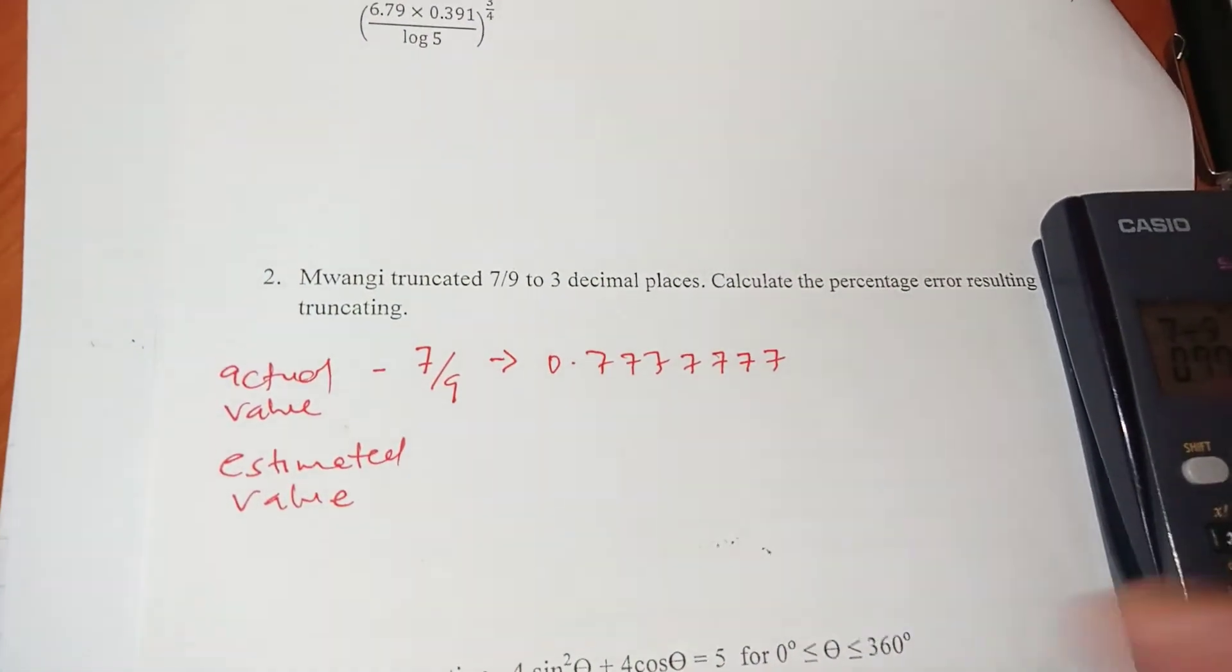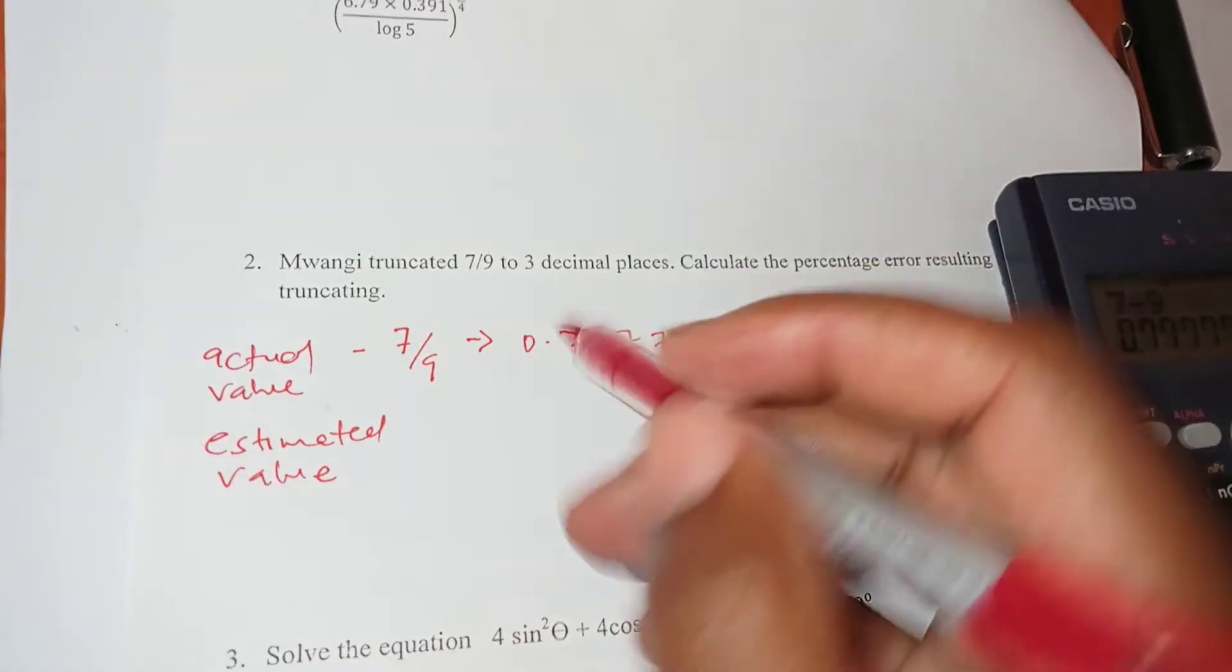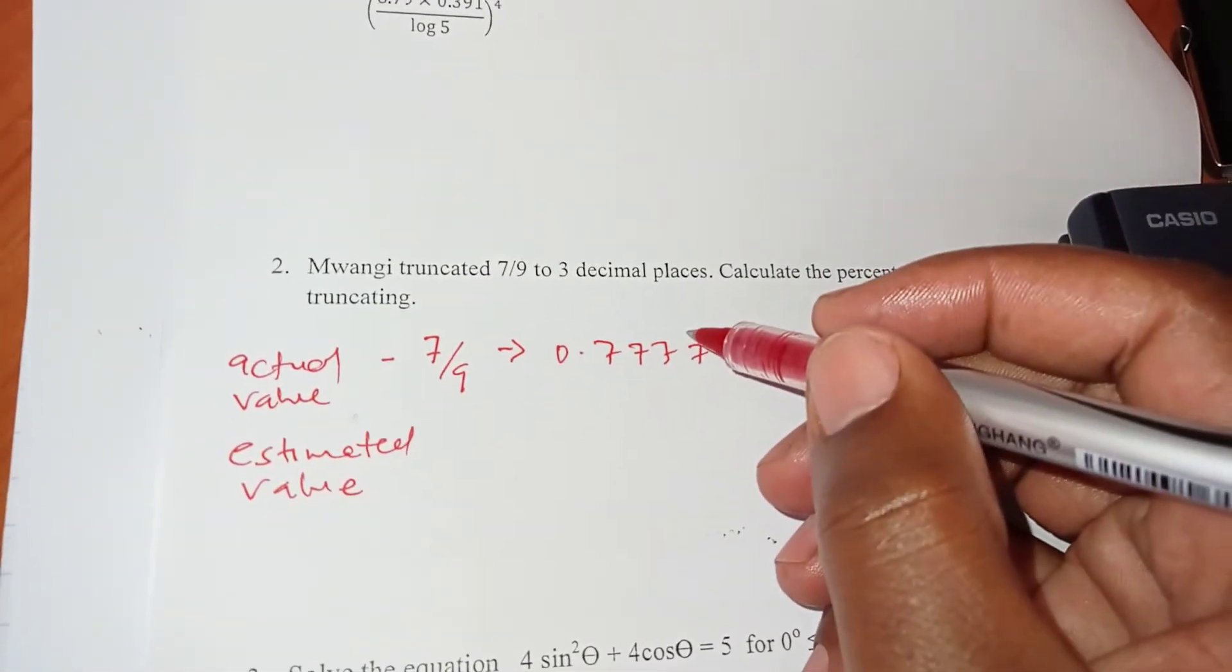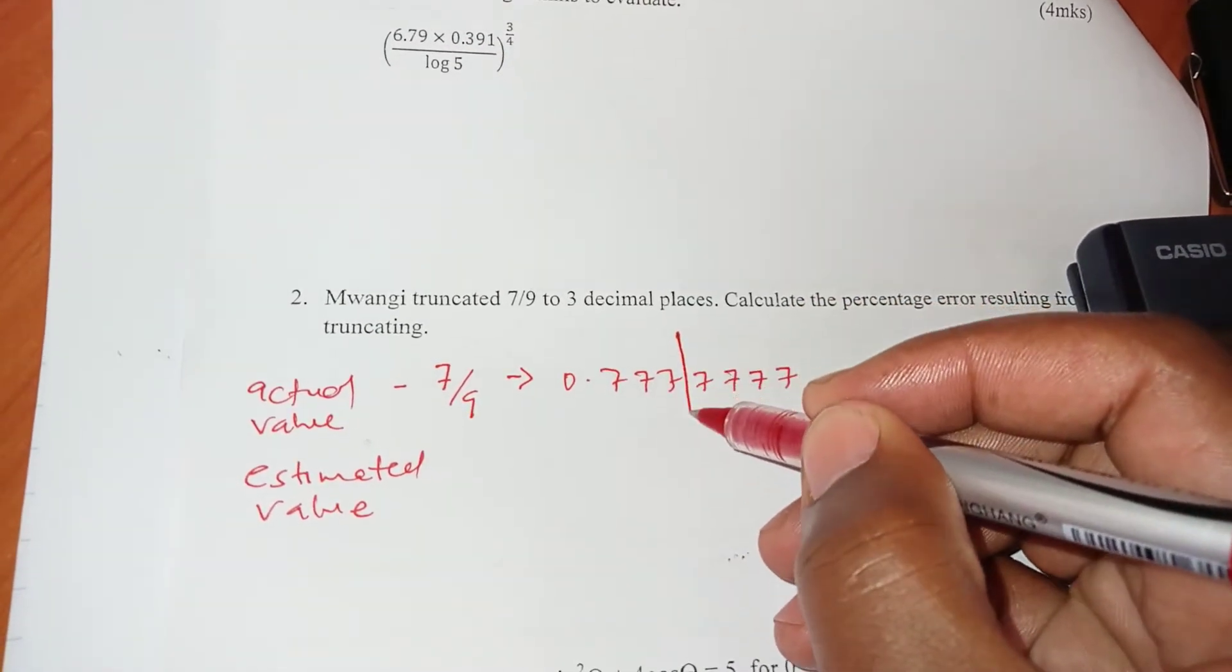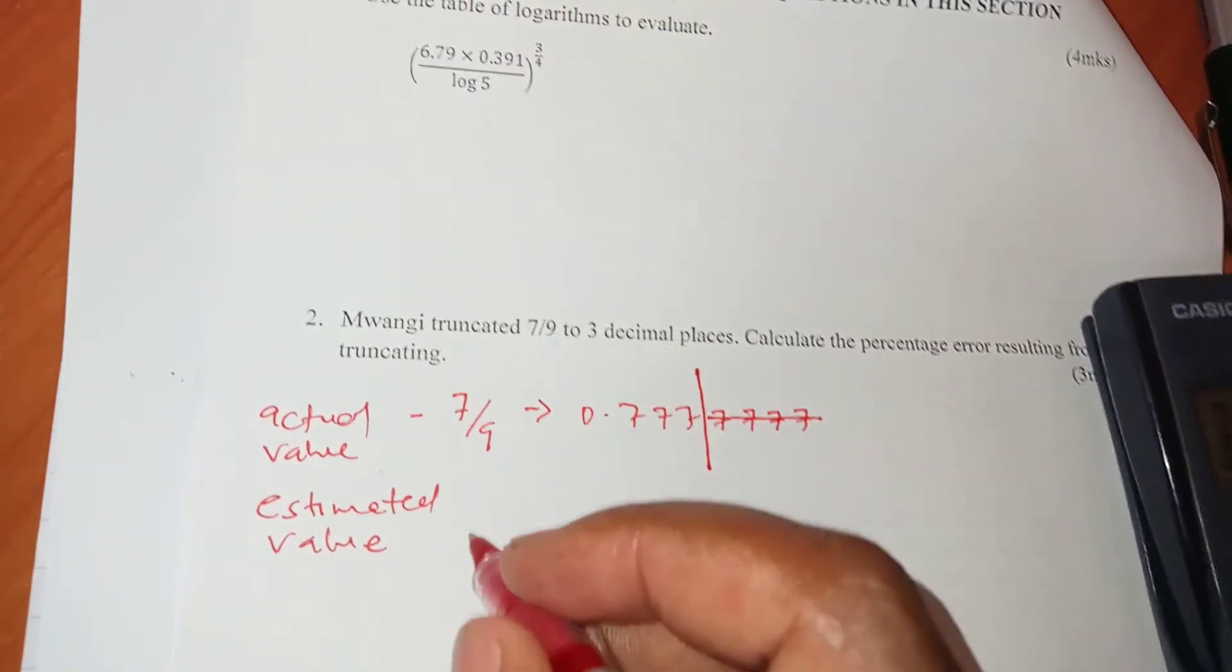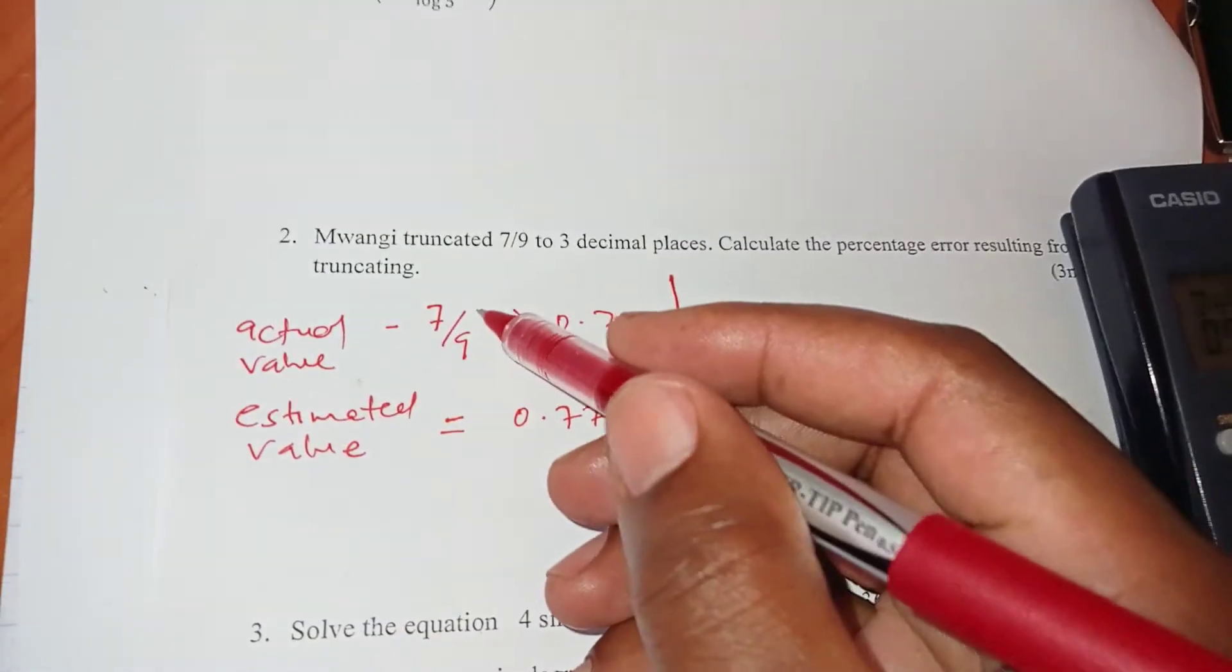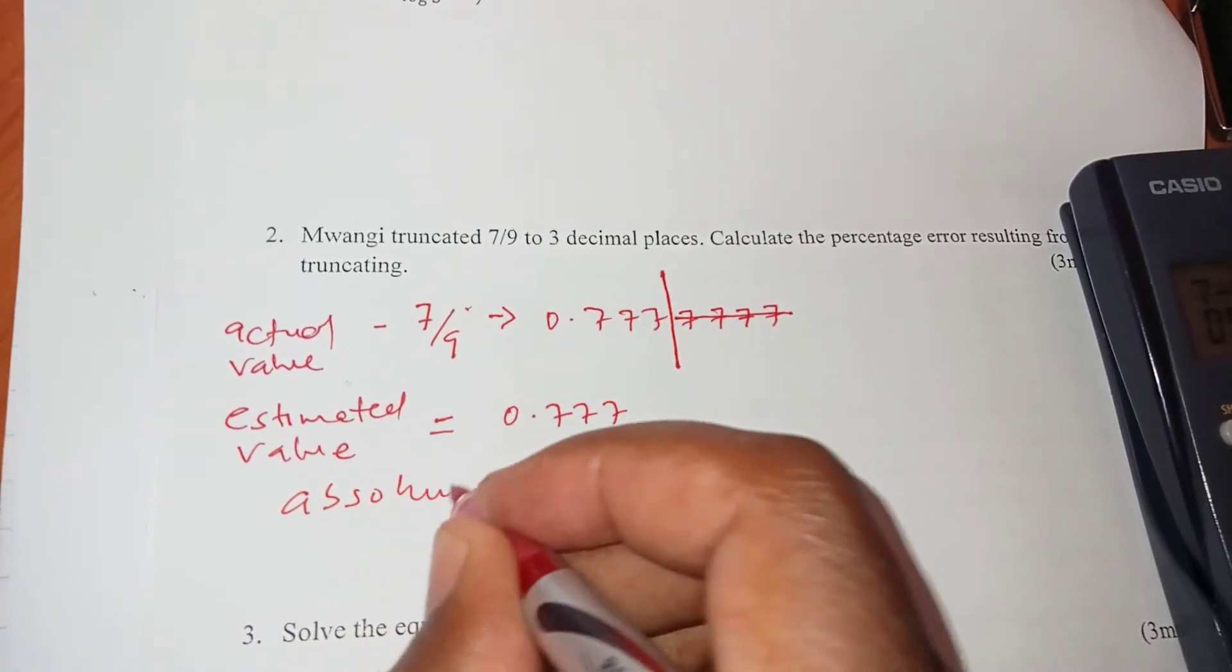So seven divided by nine we have 0.7777777 - we don't need all those but we need up to some number here which does not go less than the number of decimal places we need. This guy chopped off correct to three decimal places just like the way we did the previous example. So chopped off up to that point and ignored those numbers. So the approximated value is 0.777.